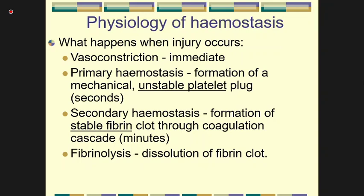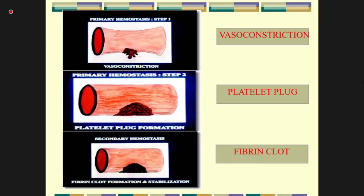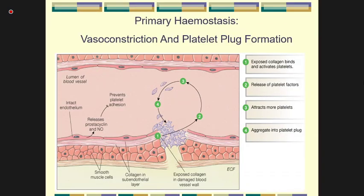At the same time, the fibrinolytic pathway is initiated to ensure that the fibrin clot is confined only to the area of the injured vessel. The three important steps are vessel constriction, platelet plug formation, and fibrin clot. Primary hemostasis consists of vessel constriction and platelet plug formation.